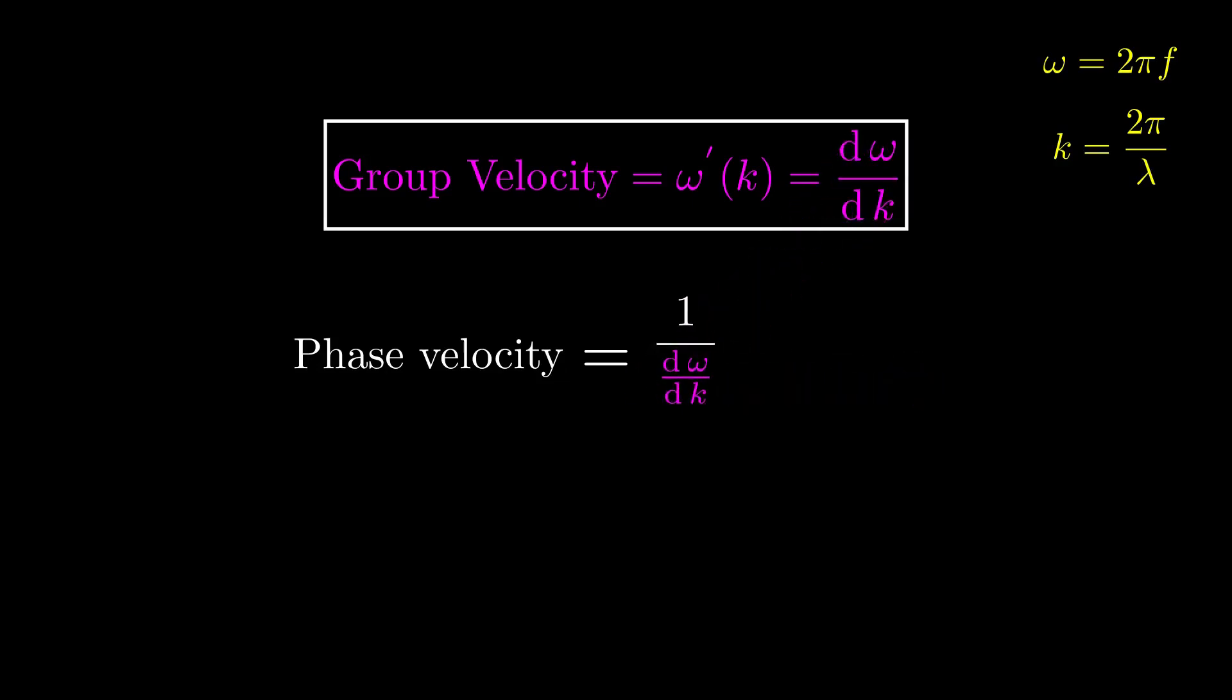The angular frequency omega, by the way, is just a scaled version of the frequency. And the wave number K is basically the inverse of the wavelength. Let us express the phase velocity with the angular parameters too.